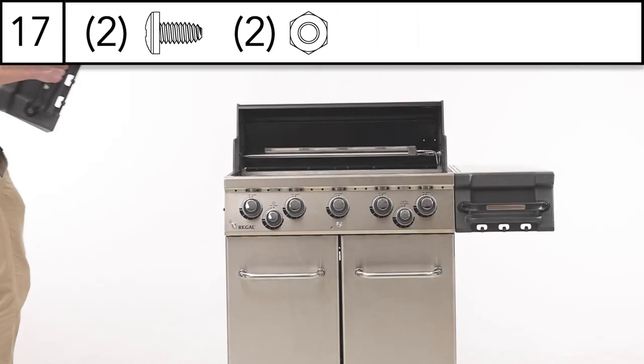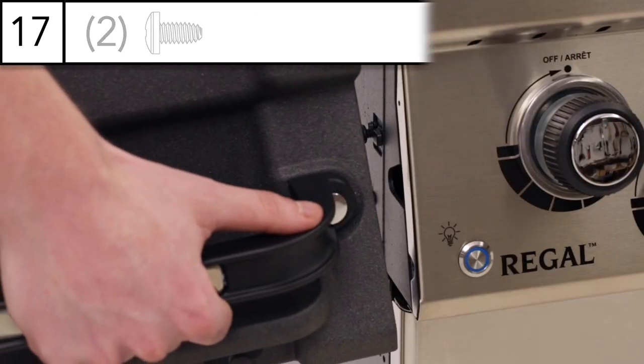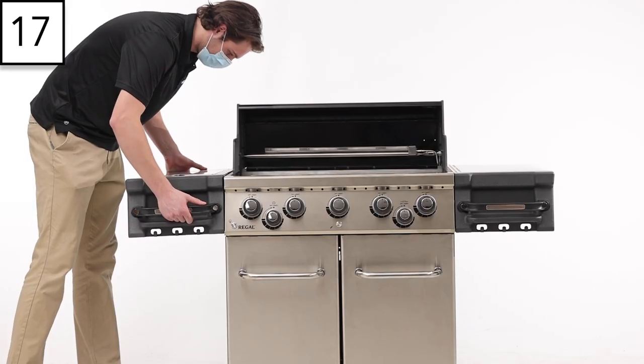Step 17: Install the left-hand shelf on your grill, following the same steps used for the right-side shelf.